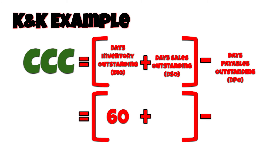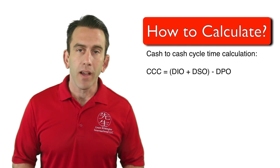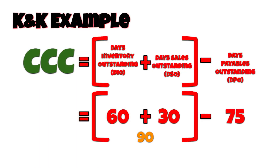It takes K&K Manufacturing an average of 60 days to sell its inventory. Once they have sold their product, it then takes them about 30 days to collect payment from customers. In general, K&K pays its suppliers in 75 days. With this data, we add 60 days inventory outstanding and 30 days sales outstanding, then subtract 75 days payables outstanding, and we get a cash-to-cash cycle time of 15 days.